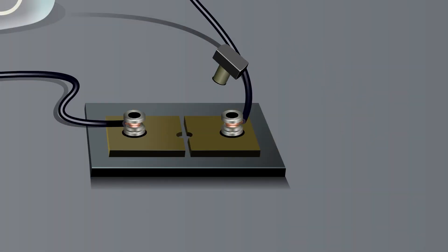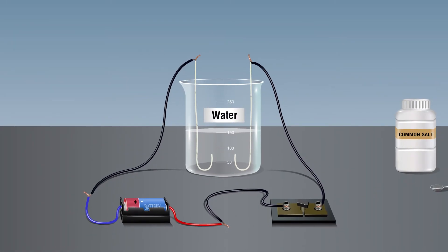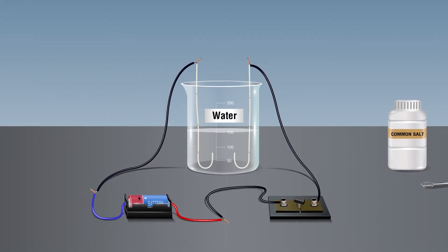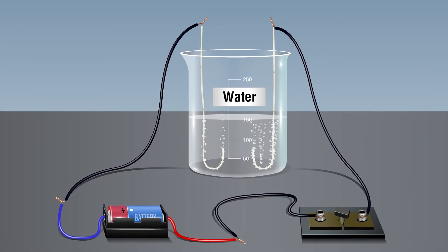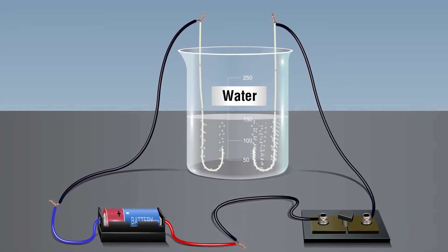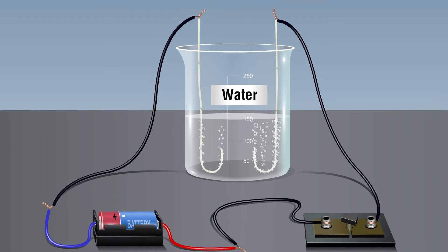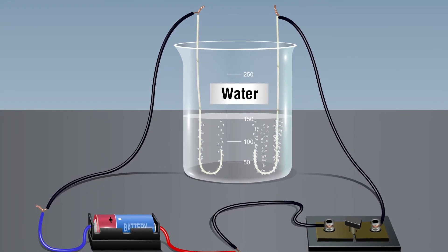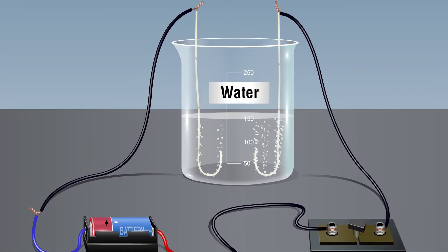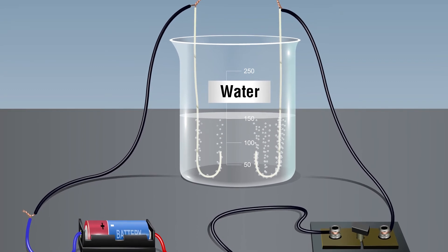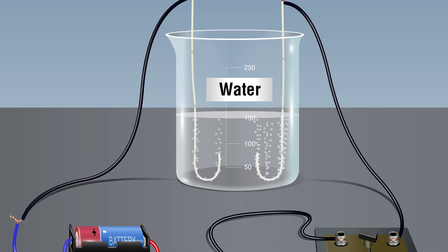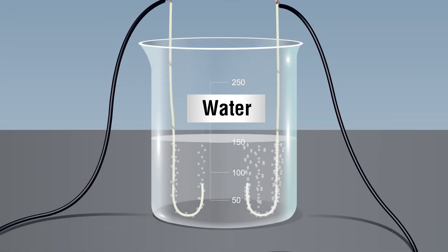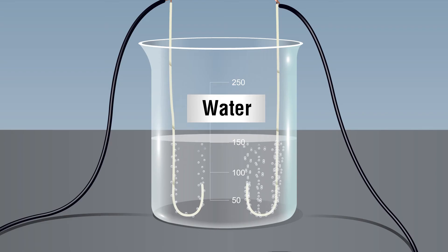Insert the key into the plug and wait for a few minutes. We observe that small bubbles are formed on both electrodes. A smaller number of bubbles are formed on the electrode connected to the positive terminal, and a larger number of bubbles are formed on the electrode connected to the negative terminal. Bubbles are formed as long as the key remains inserted in the plug.